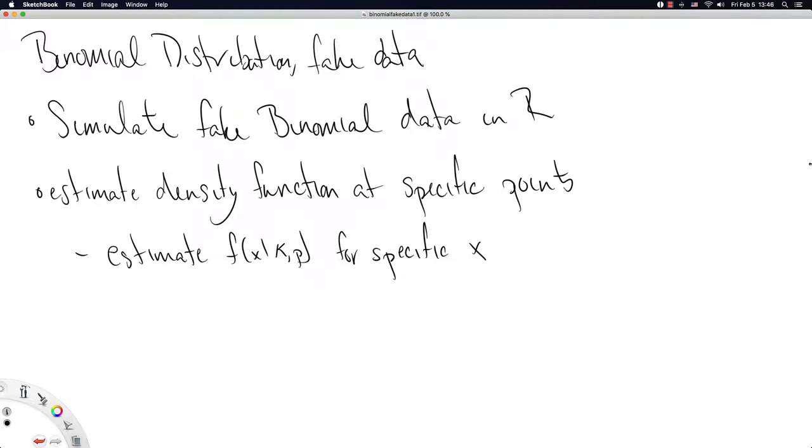This video is going to continue in our series on named distributions, and specifically we're going to dive a little bit deeper into the binomial distribution. We're going to start by simulating some fake data in R, and then we're going to estimate the density function for the binomial distribution at specific points.